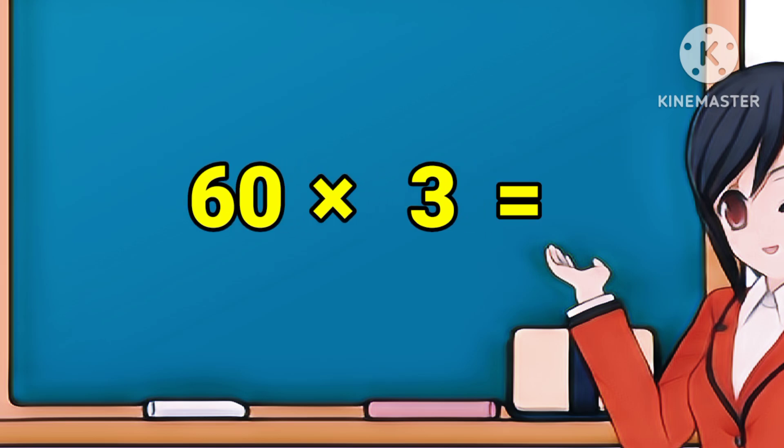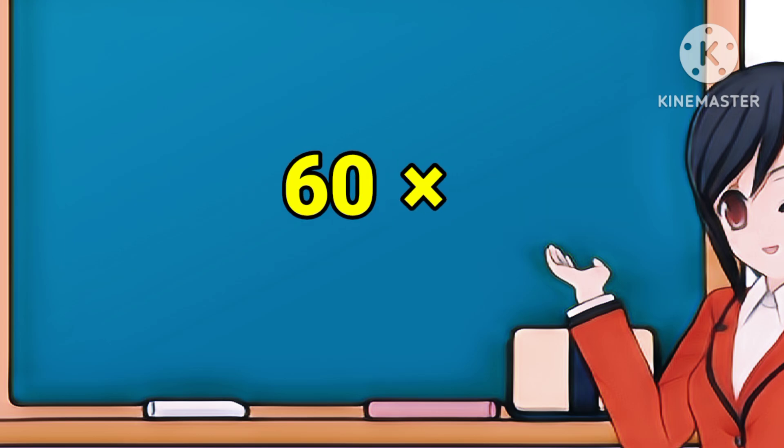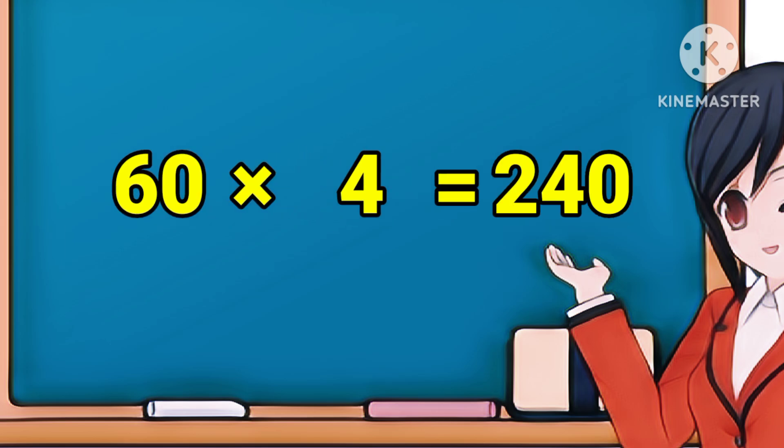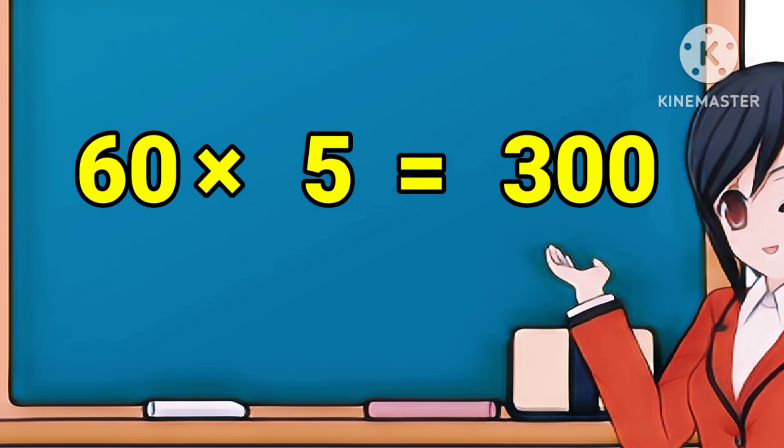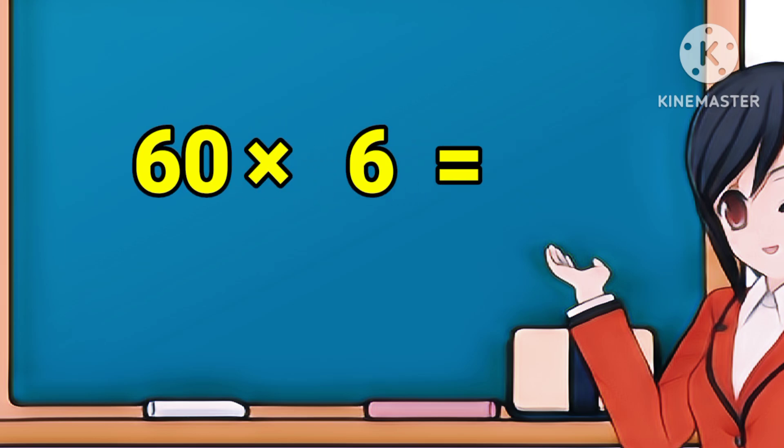63's are 180. 63's are 180. 64's are 240. 64's are 240. 65's are 300. 65's are 300.